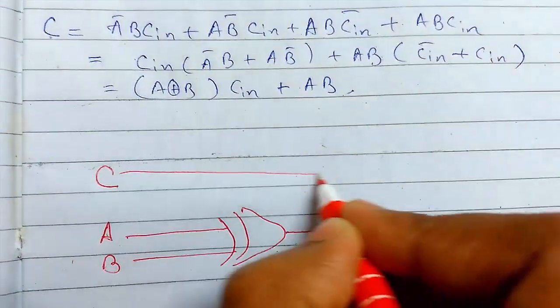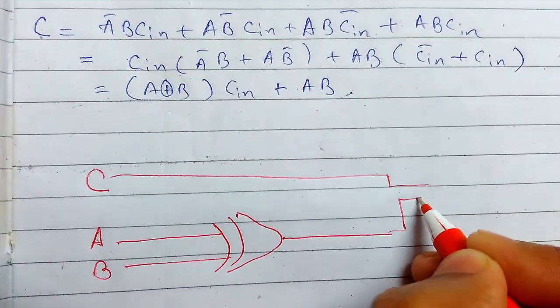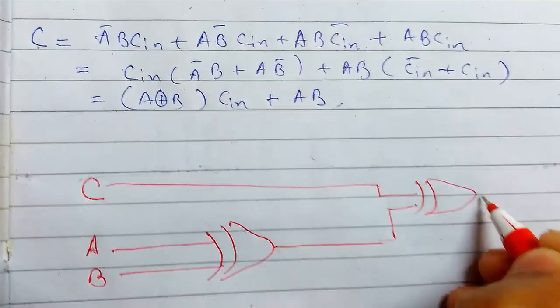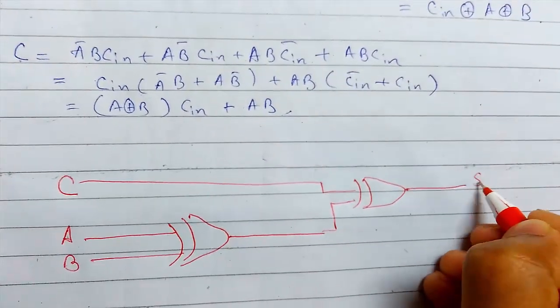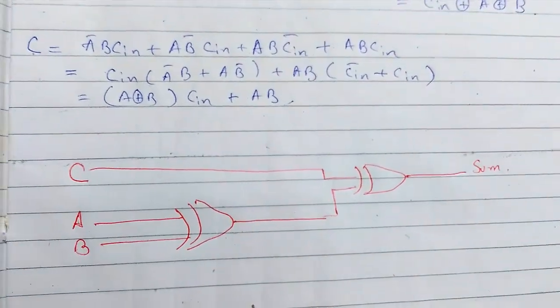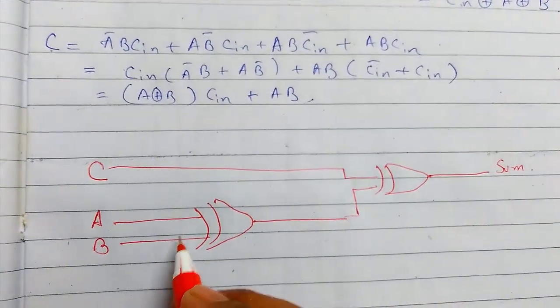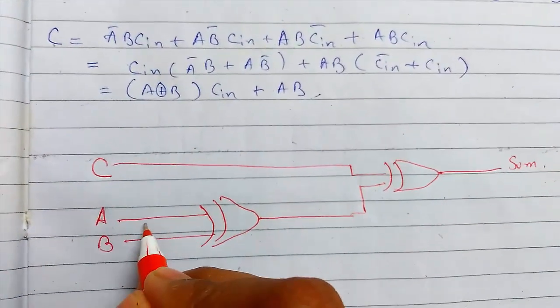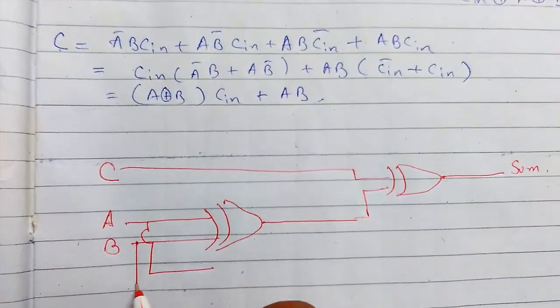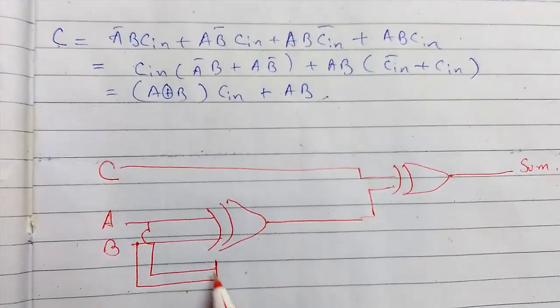First of all, I'll pass A and B through XOR gate, and pass the resultant with C-in to get sum value. This will give me the sum. Now I need to find the carry.